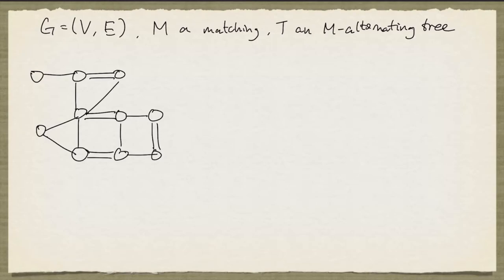Given a bipartite graph G and a matching M, if M is not a perfect matching, we can build an M-alternating tree to help us identify any M-augmenting path so that we can obtain a bigger matching. If no M-augmenting path can be identified, then T must be a frustrated M-alternating tree and we can conclude that the graph has no perfect matching. But if we try to do the same thing when G is not necessarily bipartite, we might run into a problem.